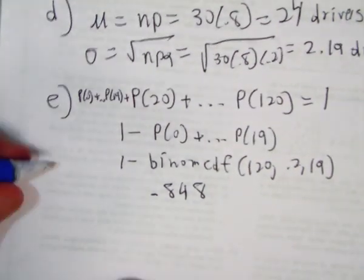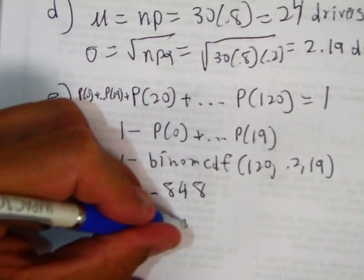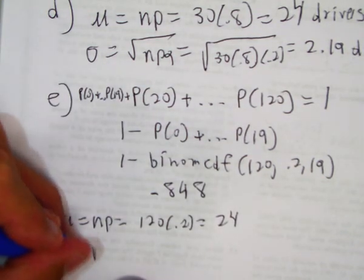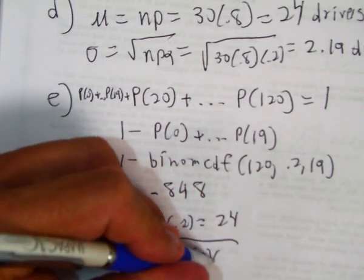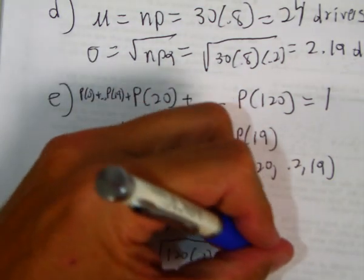That's one way of doing it. The other way we could do it is we could find the mean. So, 120 times 0.2 is 24. Standard deviation, square root of NPQ, square root of 120 times 0.2 times 0.8. If we do that, we get 4.38.